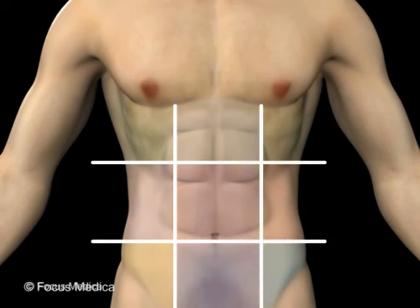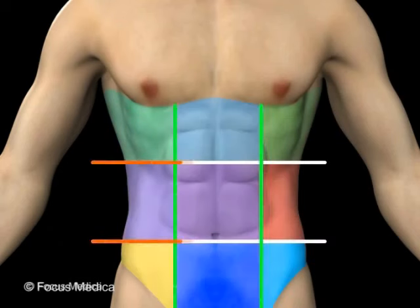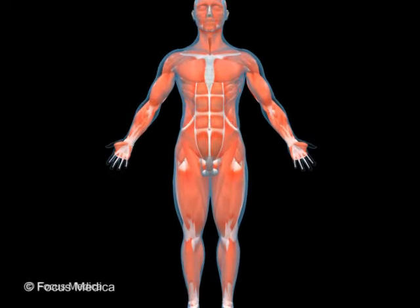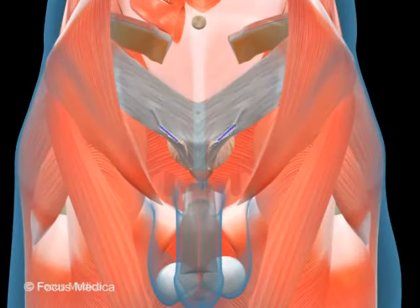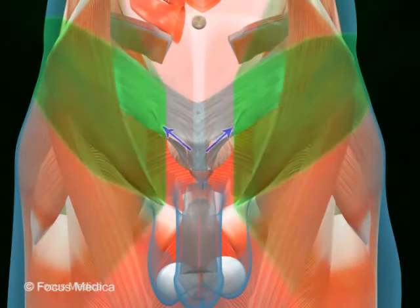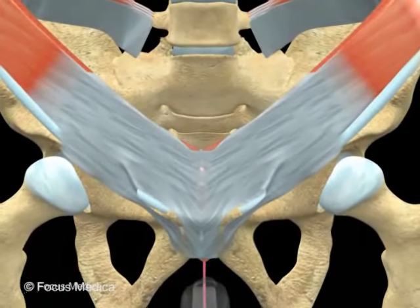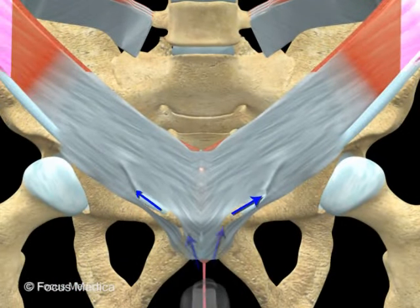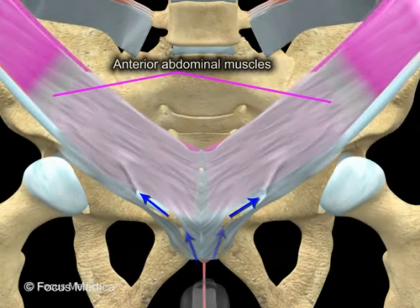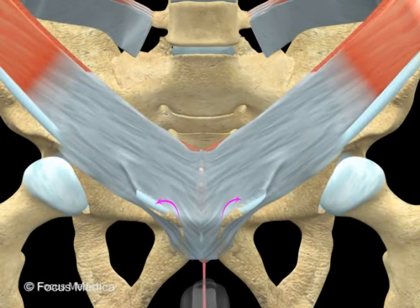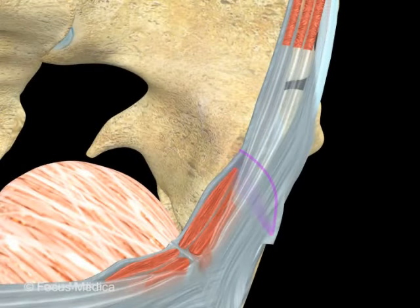The wall is divided into 9 regions by 2 vertical and 2 horizontal imaginary planes. The inguinal canal is a small canal in the groin region on either side. The canal runs amongst the anterior abdominal muscles and supralateral to the pubic tubercle for a distance of about 4 centimeters.